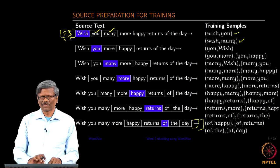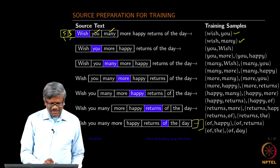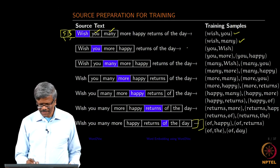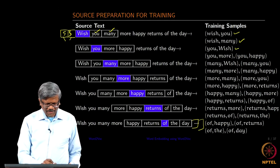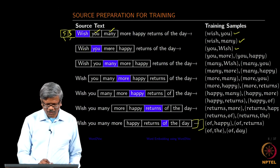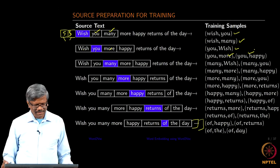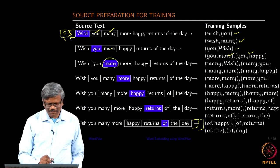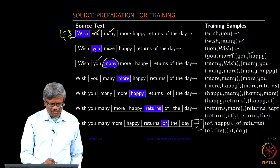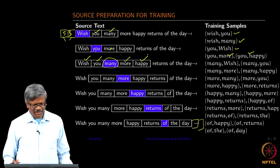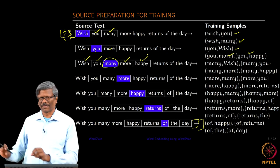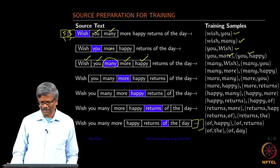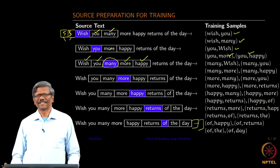When you move the window, you slide the window to the next word. Now many is your central word and you have many you, many wish, many more, many happy. In this way you keep moving the window across the entire corpus and then form the bigrams of all those words and then create a training sample.